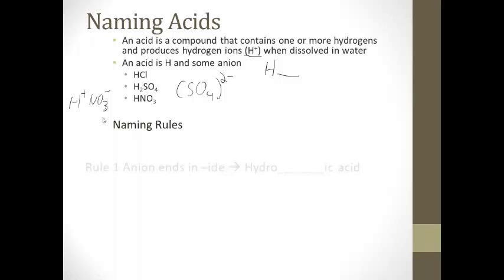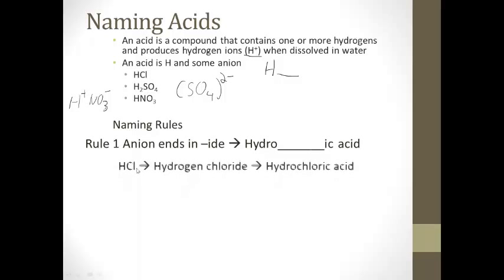So there's some rules, the naming rules. Rule one, if the anion ends in -ide, then the name of our acid would be hydro-something-ic acid. In the case of HCl, it's hydrogen chloride. The chlorine, when it becomes an ion is called chloride, so it's hydrogen chloride. We change that to hydrochloric acid. Tonight we'll practice a bunch of these in class.